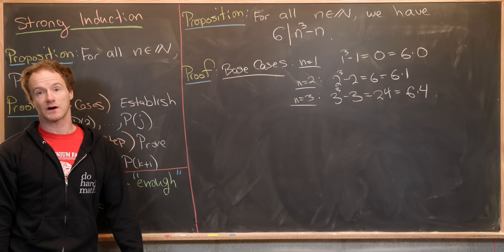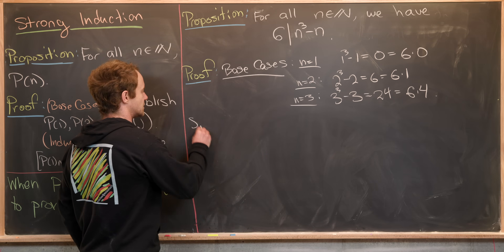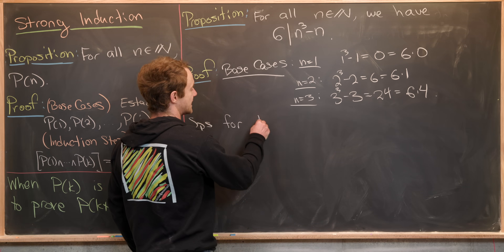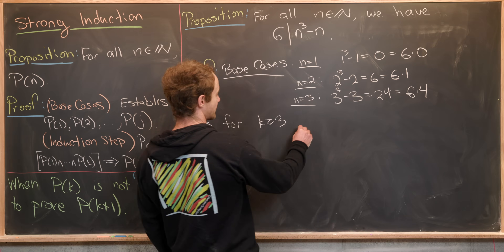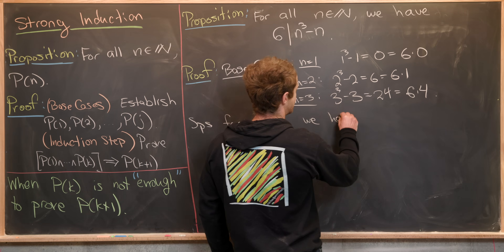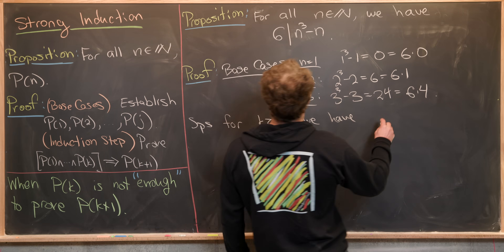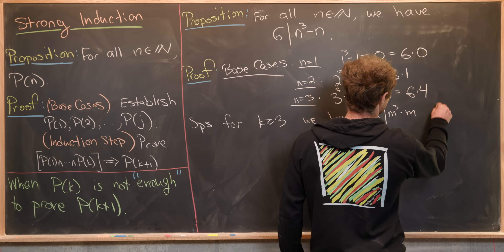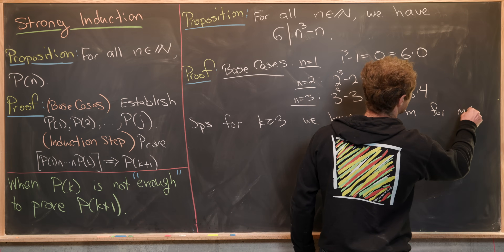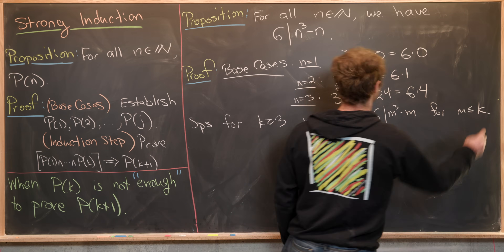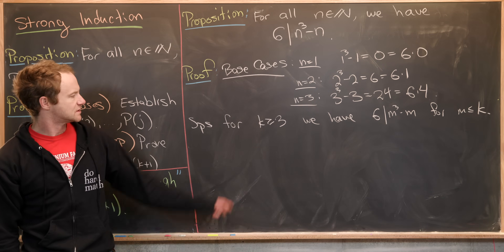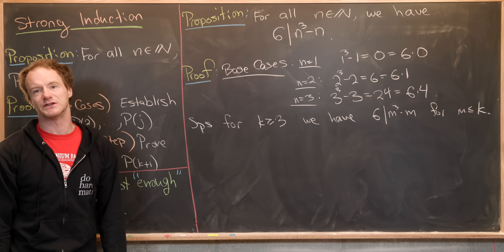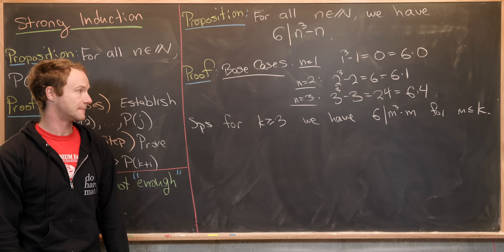For the induction hypothesis, suppose for k ≥ 3, that 6 divides m³ - m for all m ≤ k. We start at k ≥ 3 because our base cases cover everything up to that point.